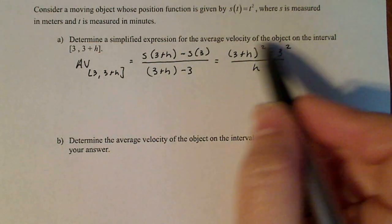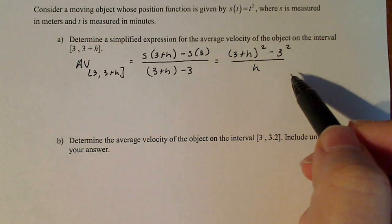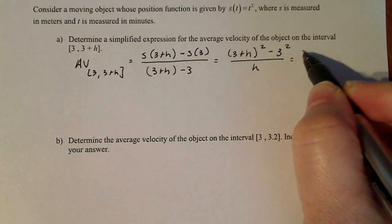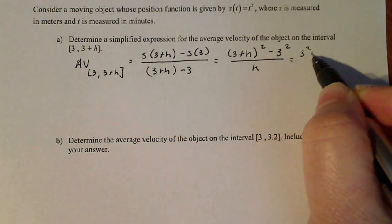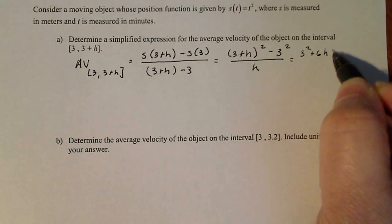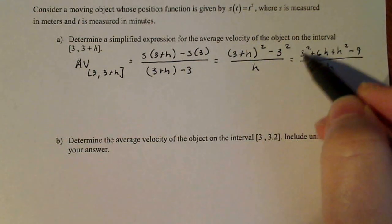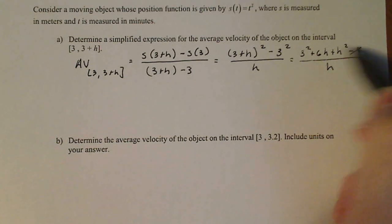Continuing, all I'm going to do is multiply out the top and simplify. So the top becomes 9 + 6h + h² - 9 divided by h. Well, 9 - 9, those cancel.